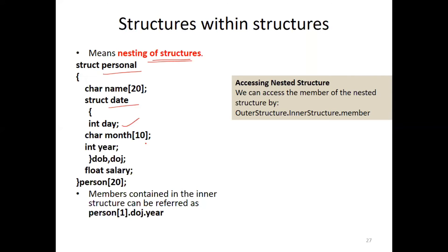That is, the day and month are part of the inner structure. There are two structure variables: DOB and POG. The outer structure has person[20] as the person in the variable. So the members can be accessed as person1.poj.year, which represents the first person's date of joining.